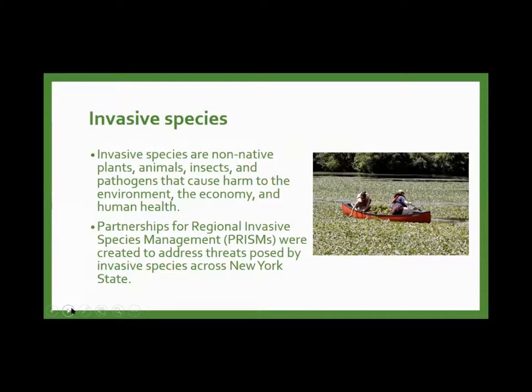Invasive species are non-native plants, animals, insects, and pathogens that cause harm to the environment, the economy, and human health. It's a big issue in New York State, and we have something called the Partnerships for Regional Invasive Species Management, or PRISM, created across New York State — eight of them — to address these issues.